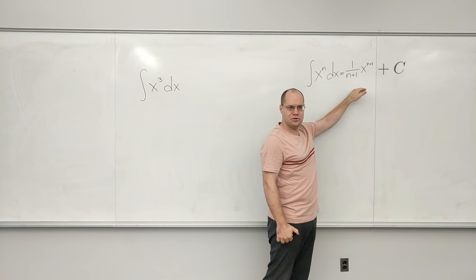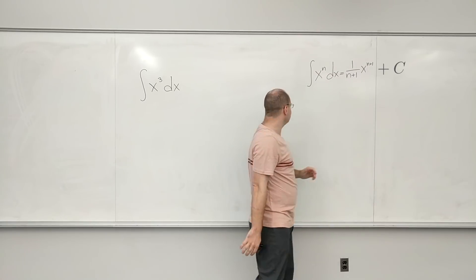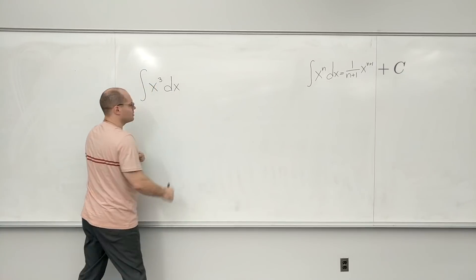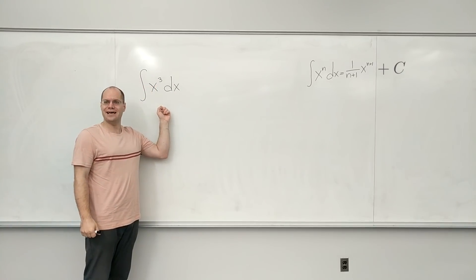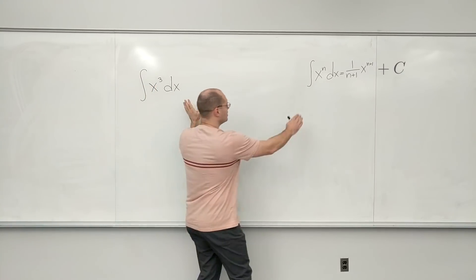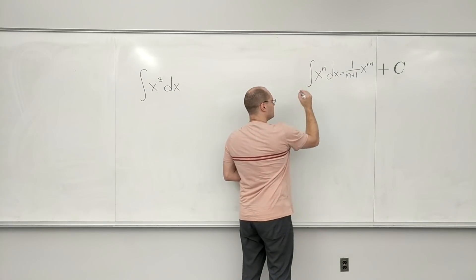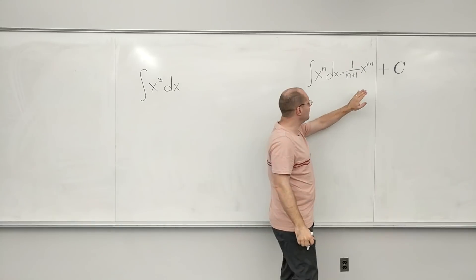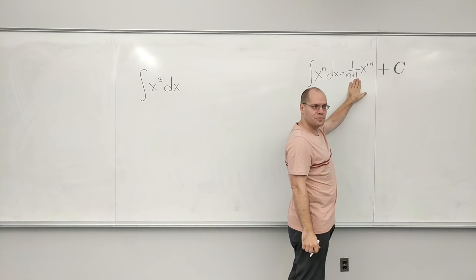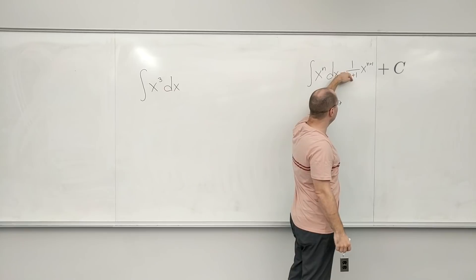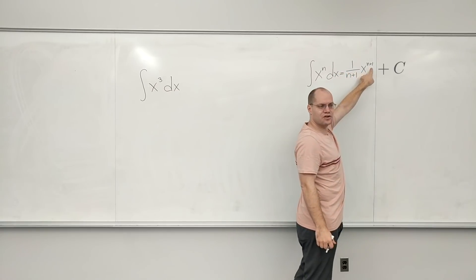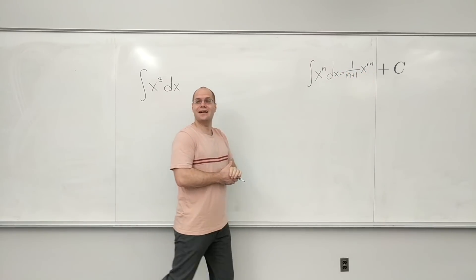Usually you're invited to use this formula, which means that you should look at this expression, identify n. Of course, matching these two up tells you that n equals 3, and so then you plug in n equals 3 into this formula. It gives you 1 over 4 x to the fourth power. Obviously it's not incorrect.